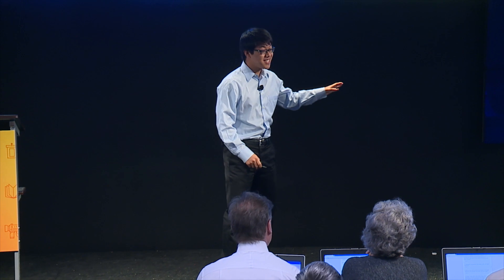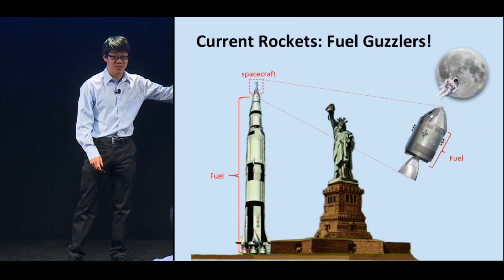To send humans to Mars, we need a revolutionary rocket technology. This is the Saturn V rocket that launched astronauts to the moon. It is the largest rocket ever built, larger than even the Statue of Liberty.